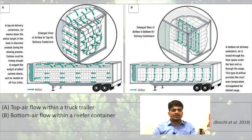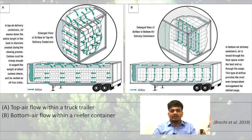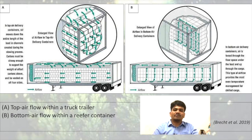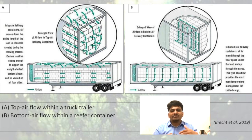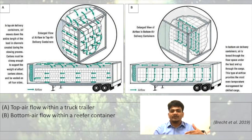In the slide, there are two figures — A and B — where we can see top airflow within a truck trailer and bottom airflow within a reefer container. One is talking about the flow of air from the top, and the second from the bottom side. In these conditions, how we store products is important, as these are the actual airflow lines that are generally present.